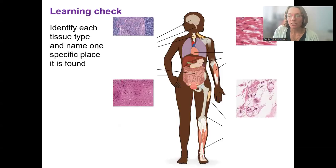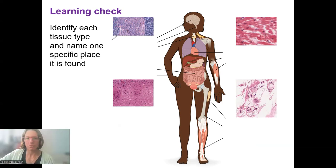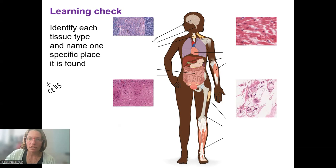I want to do a learning check here, so answer this. What I want to do, besides go over the answers, is also tell you about the cells present in these different types. If you know this already, do it yourself first. Here we're pointing to the nervous tissue present in the brain, spinal cord, and nerves.